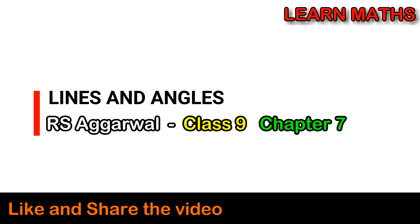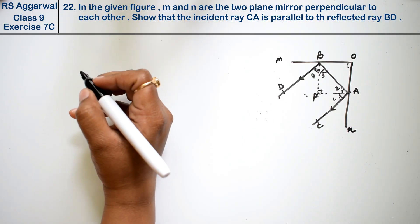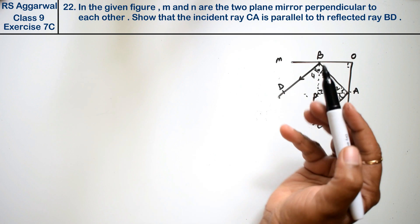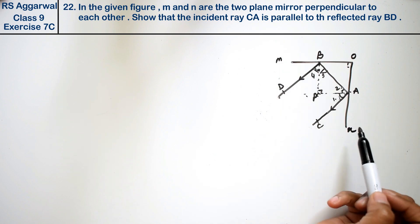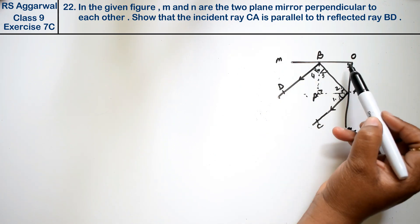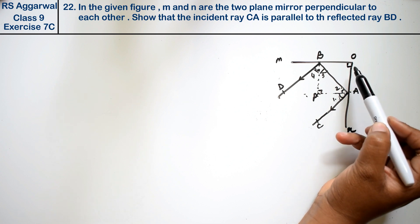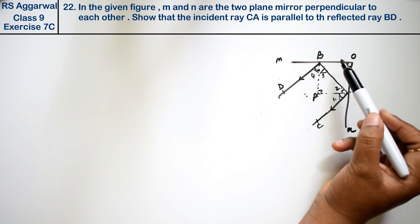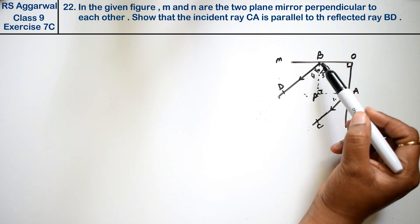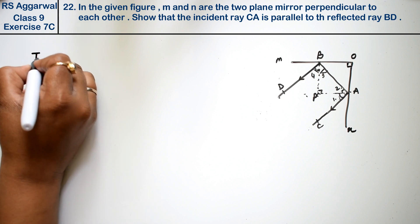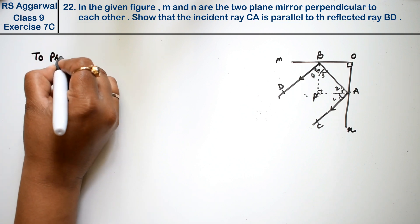Let's do question number 22 of Exercise 7C — Lines and Angles. In the given figure, M and N are two plane mirrors perpendicular to each other. Since they are perpendicular, they form a 90 degree angle. We have to show that the incident ray CA is parallel to the ray of reflection BD. So, we need to prove that CA is parallel to BD.